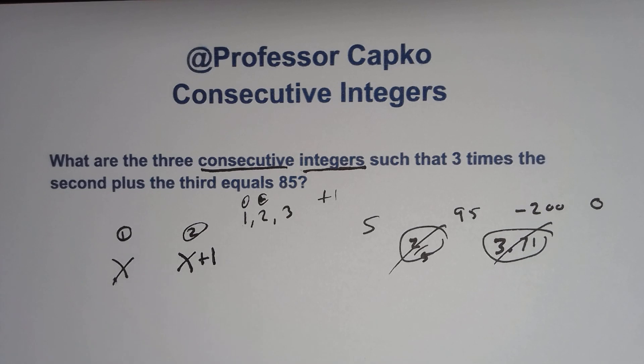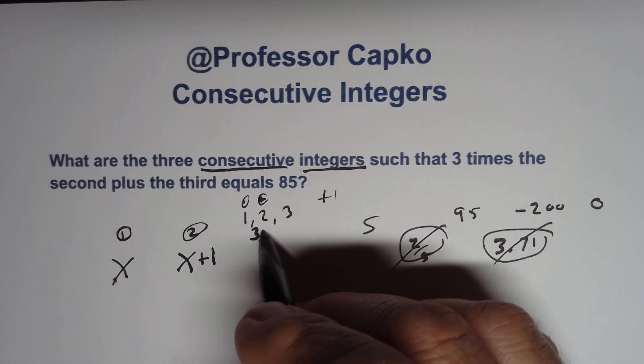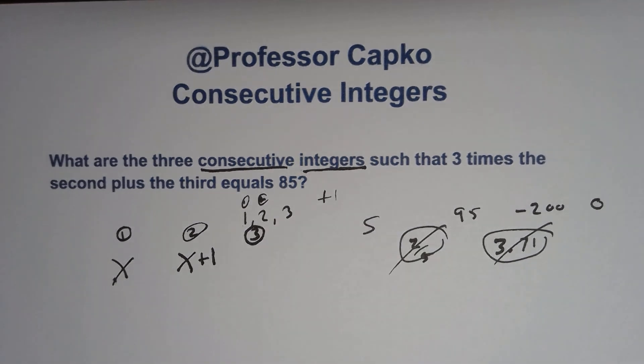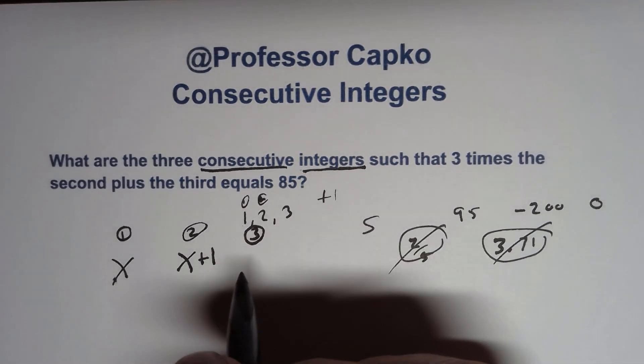Anytime you have consecutive integers, that's how you're going to do it. And then we need our third integer again. I'm circling the three just so we know it's not a number. I'm just putting them in order.